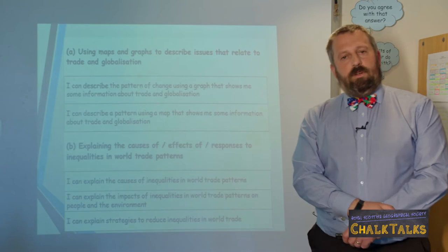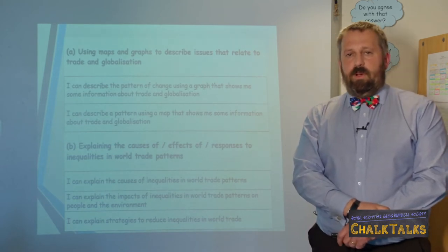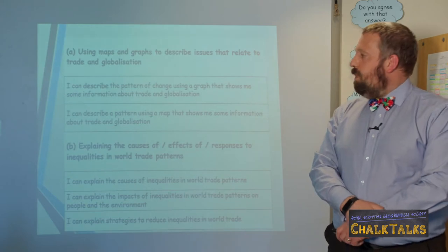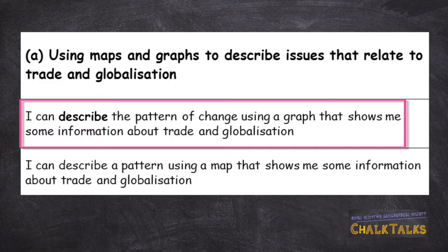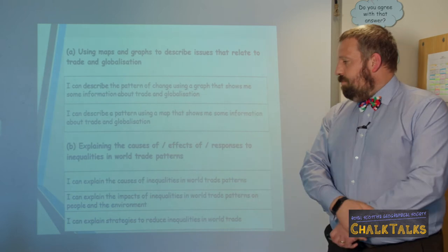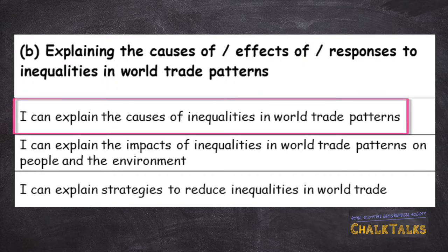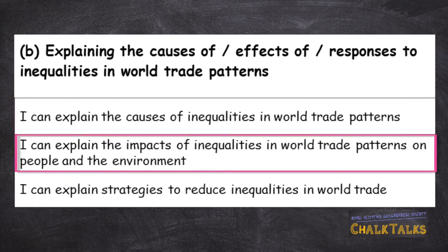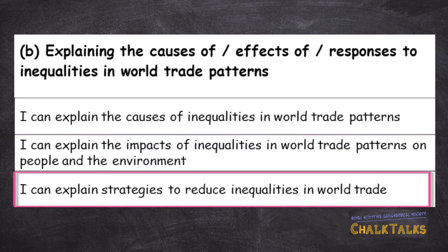I've grouped the learning outcomes around Part A and Part B of the question. For Part A, you'll need to be able to describe patterns of change using a graph showing information about trade and globalisation, and also describe patterns from a map showing information about trade and globalisation. For Part B, you'll need to explain the causes of inequalities in world trade patterns, the impact that these inequalities can have on people and on the environment, and strategies to reduce these inequalities.